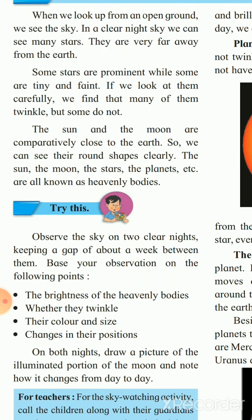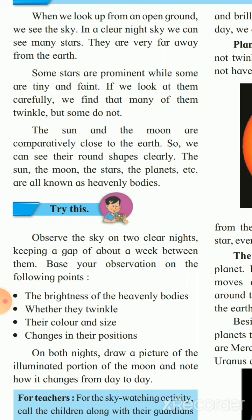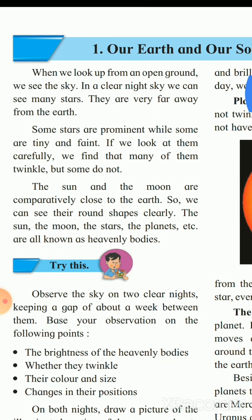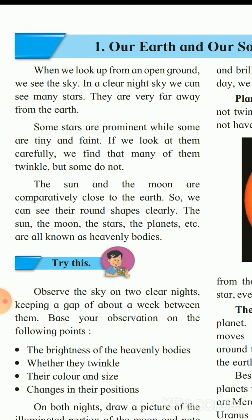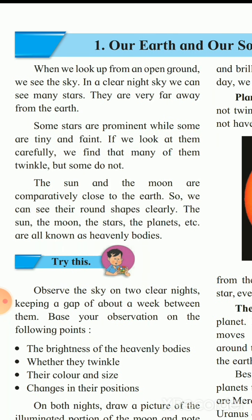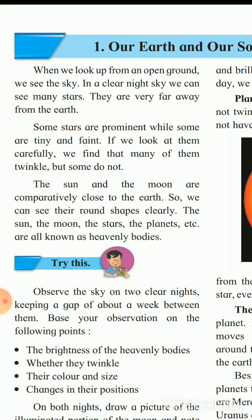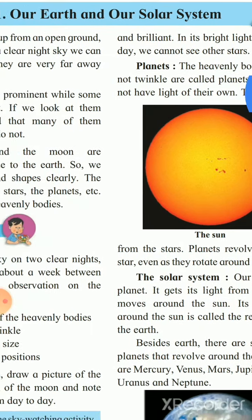The sun and the moon are comparatively close to the Earth, so we can see their round shapes clearly. The sun, the moon, the stars, and the planets are all known as heavenly bodies. Earth is a planet. We can see the sun and the moon clearly, but stars twinkle and we cannot see their shapes. Together, the sun, the moon, the stars, and the planets are known as heavenly bodies.